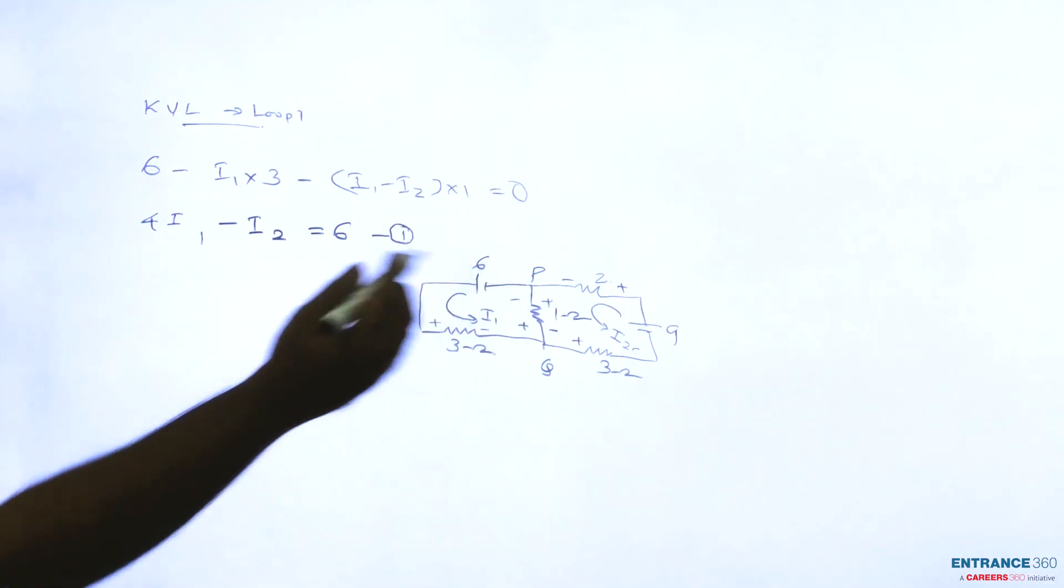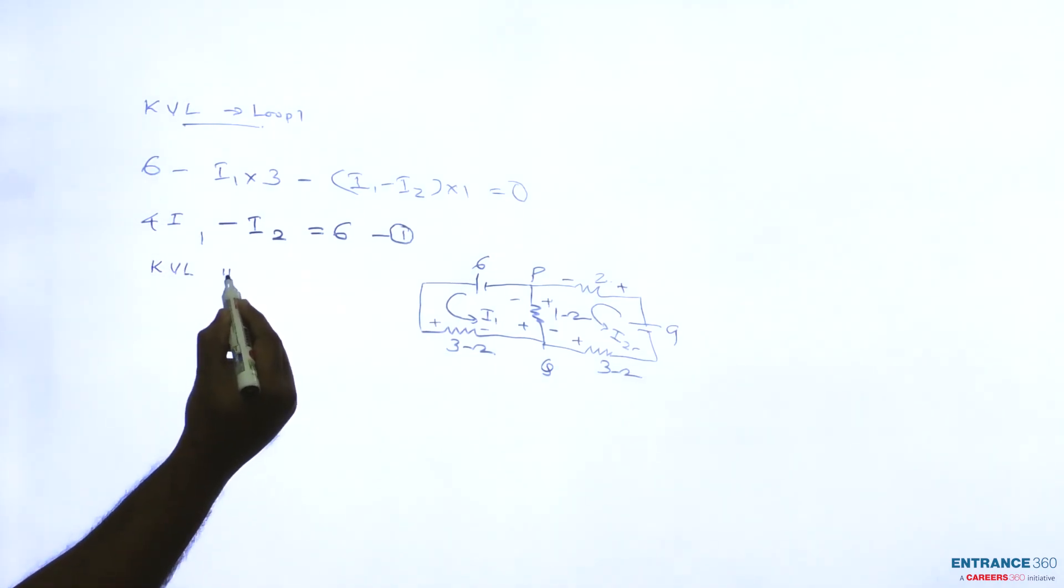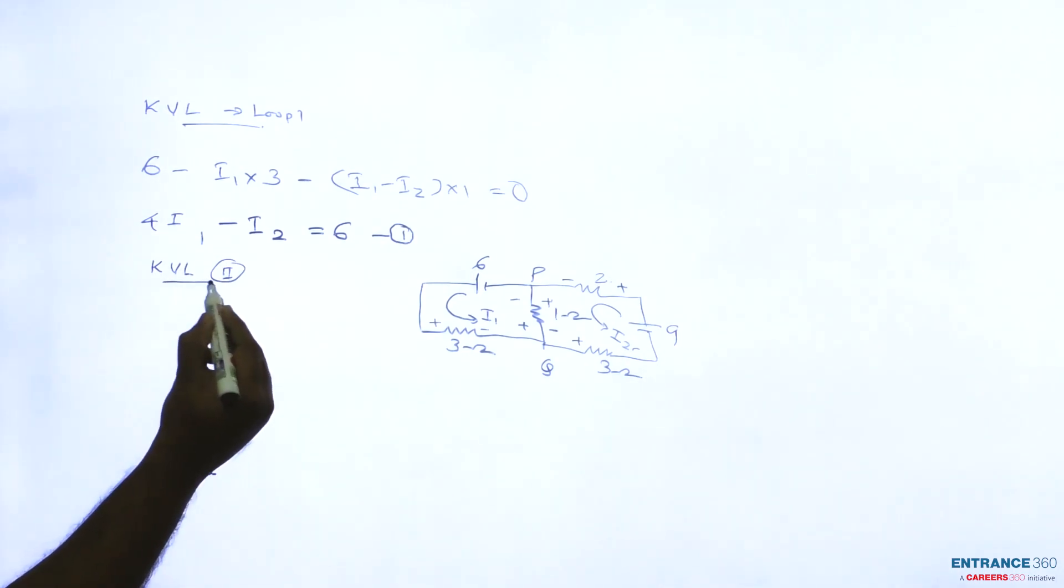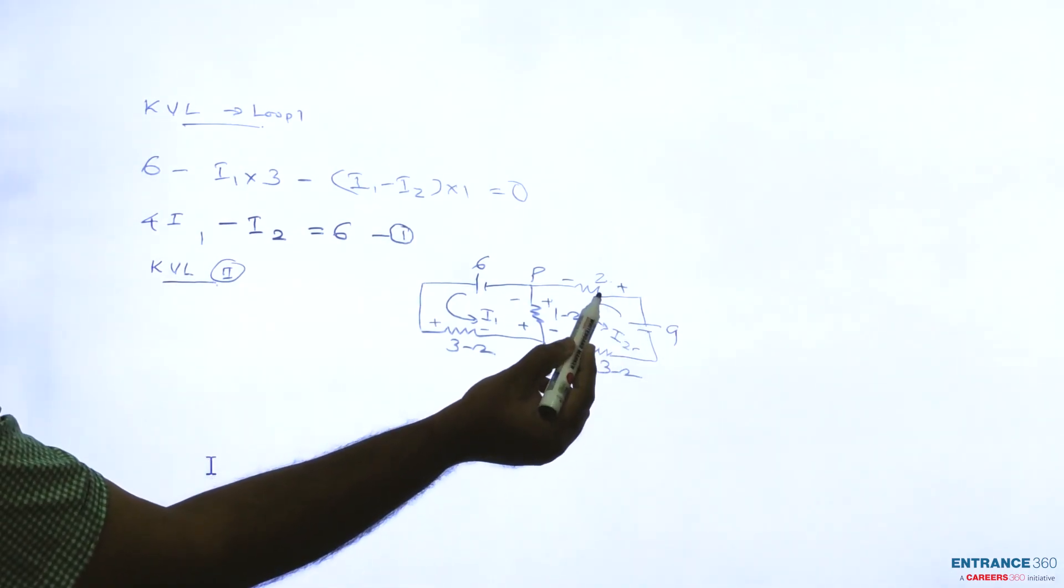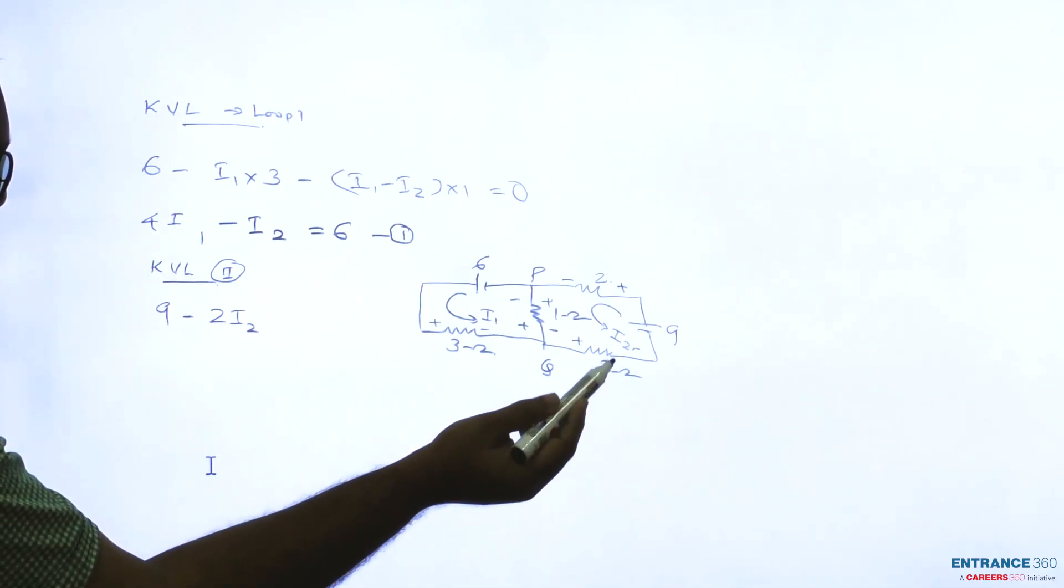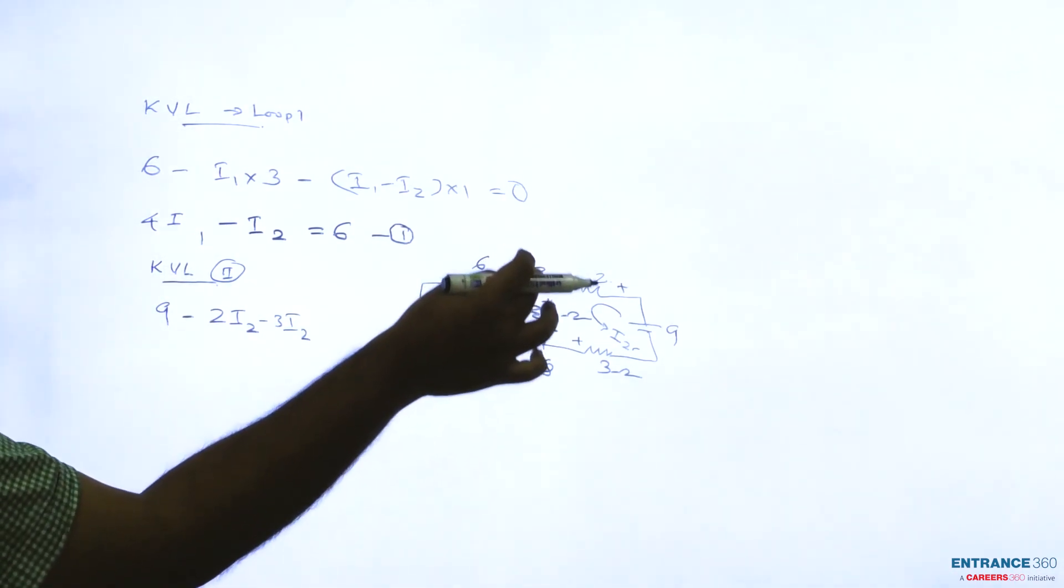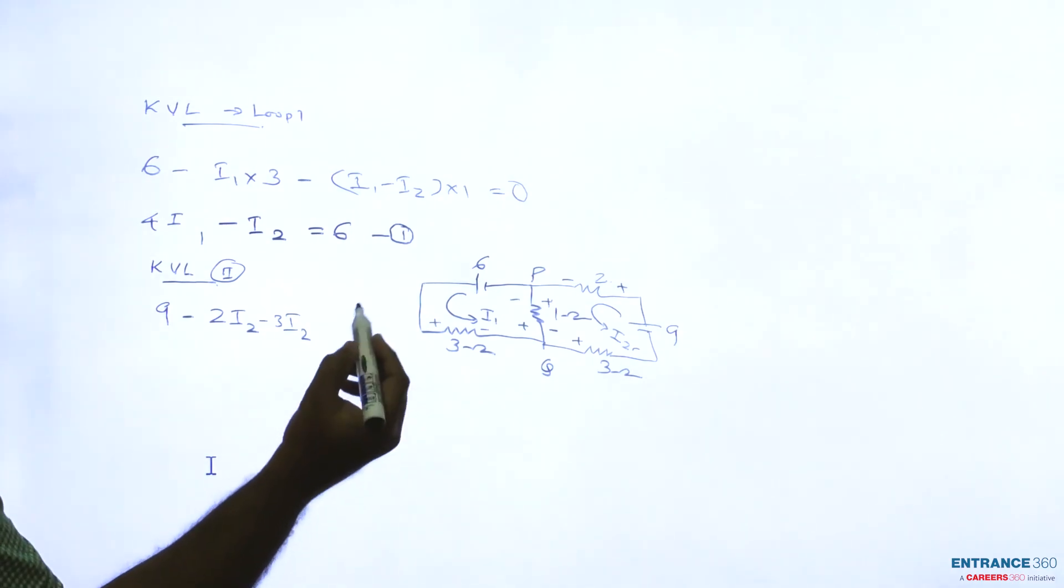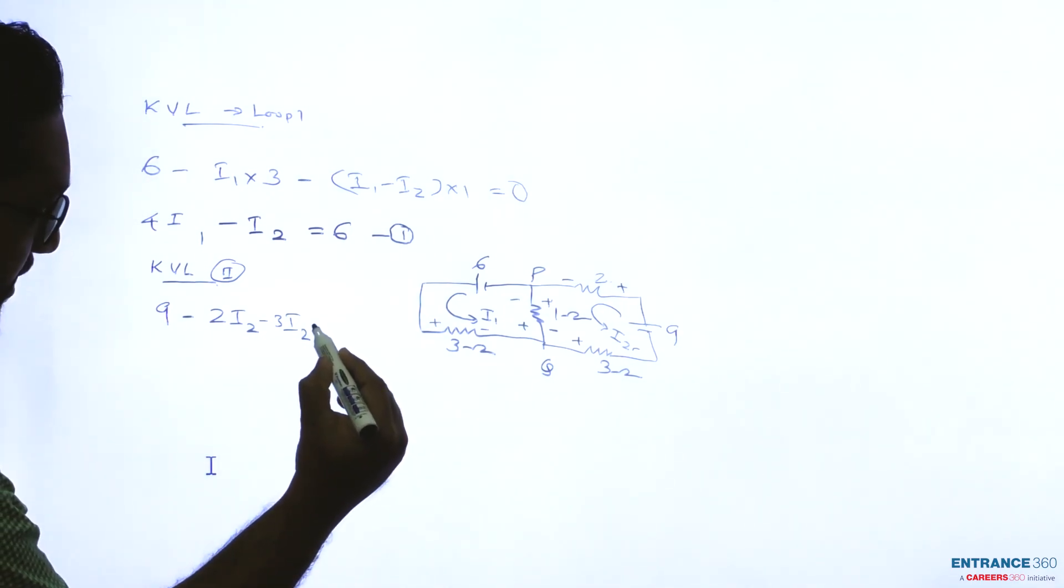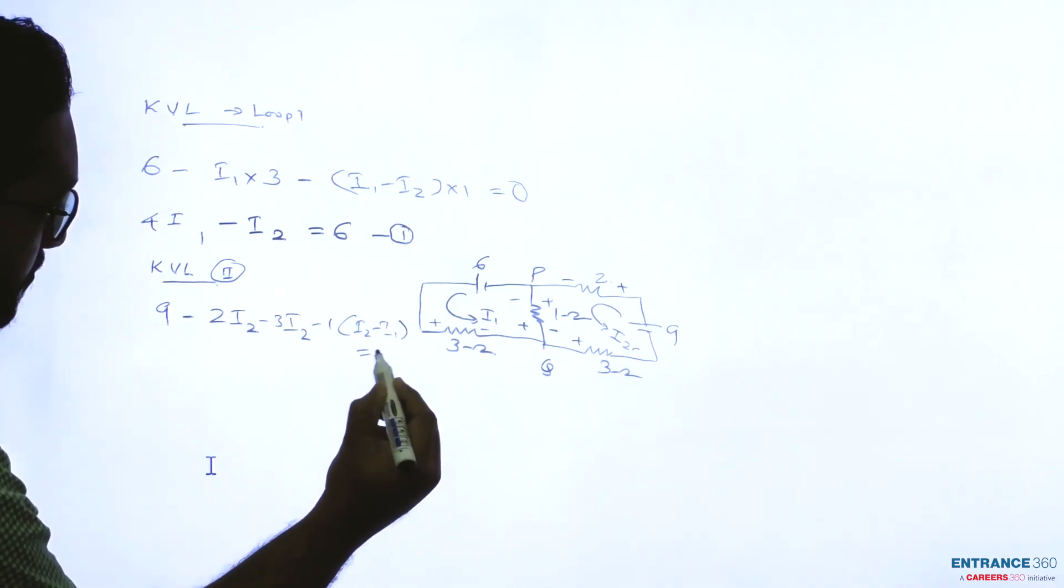Now apply KVL in loop 2. We get 9 minus 2I2, and through 3 ohm also I2 current is flowing, so minus 3I2, and current flowing through 1 ohm is I2 minus I1 equal to 0.